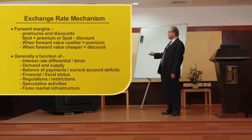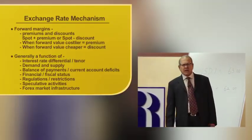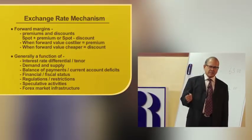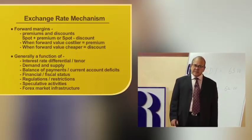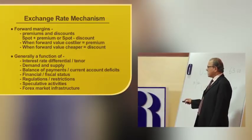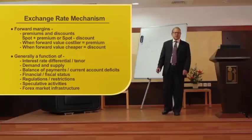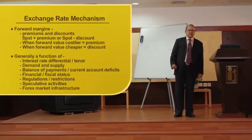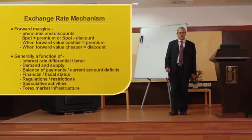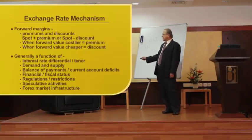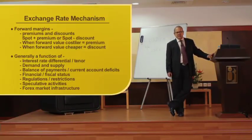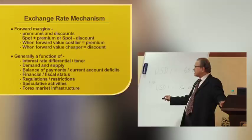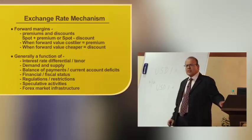The first factor is interest rate differential. Let us assume the Japanese yen rate is almost zero and the Indian rate is about 10%. This indicates that the Japanese yen would be at a premium with reference to the Indian rupee. Next is tenor — naturally a one-month deal will be cheaper than a three-month deal because of the interest factor involved.